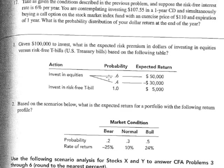What you have to do is take the weighted average: 60% times $50,000 plus 40% times minus $30,000. If you take the weighted average, it turns out to be $18,000. So the return from equities is $18,000, but the return from the risk-free investment is $5,000. So the risk premium in dollars would be $18,000 minus $5,000, and the answer is $13,000.